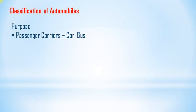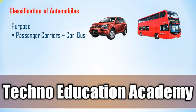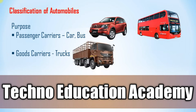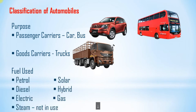Now we will classify the automobile. According to purpose, we can classify automobiles as passenger carriers — examples include buses and cars, used to carry passengers from one place to another — and goods carriers, where trucks are used to carry goods from one place to another.